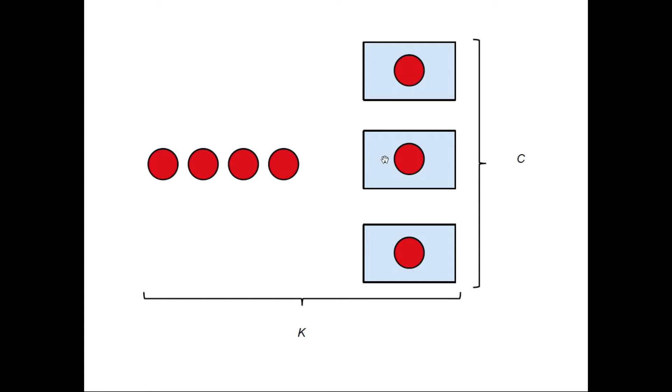We have a certain amount of servers, so here for example there's three of them, but a certain amount that we're going to call c, so in this case c is three.